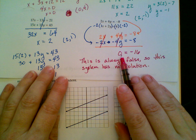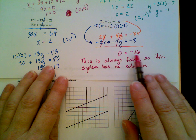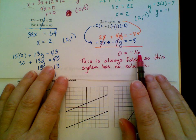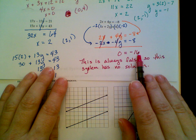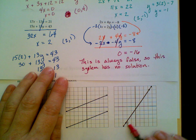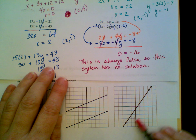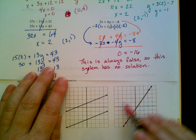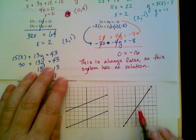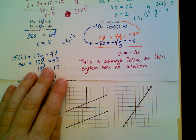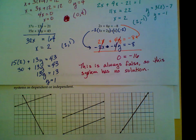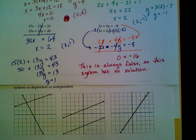If I had gotten something that was 0 equals 0, or any other number equals itself that's always true, I would have a consistent and dependent solution like this one. It wouldn't look exactly like this, but the two equations would have exactly the same graph. So, hopefully that refreshes your memory of our review of systems of linear equations. And that's it for this video.